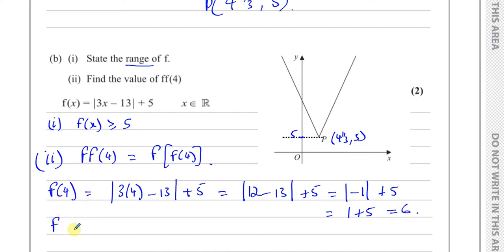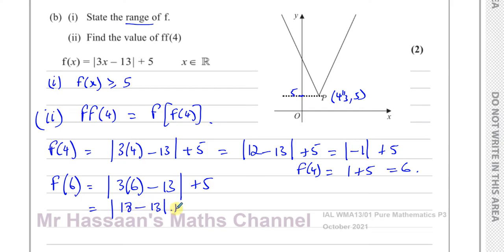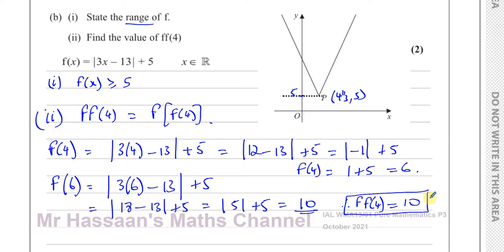Now we need to find f of f of 4, which means finding f of 6. Replace x with 6: the modulus of 3 times 6 minus 13, plus 5, which is the modulus of 18 minus 13, plus 5. That's the modulus of 5 plus 5. The modulus of 5 is 5, so 5 plus 5 equals 10. Therefore f of f of 4 equals 10.